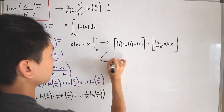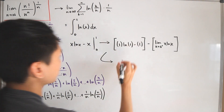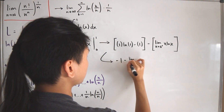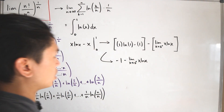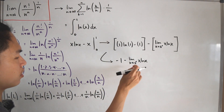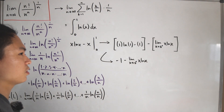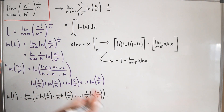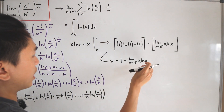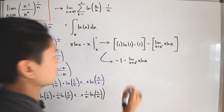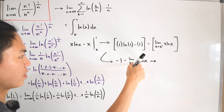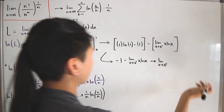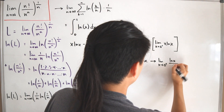At x equals 1: 1 times ln(1) is 0, minus 1 gives negative 1. So we still need to subtract the limit as x approaches 0 plus of x times ln(x). We can rewrite this in terms of a rational function — writing x as 1 over x in the denominator, giving ln(x) over 1/x. This is an indeterminate form since ln(0+) approaches negative infinity and 1/x approaches positive infinity.